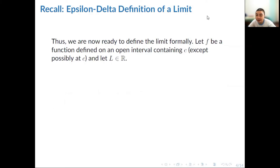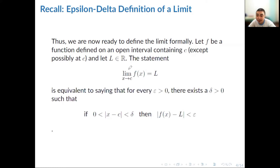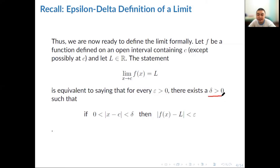At this point, we're ready to formally define the limit. Let f be a function defined on an open interval containing c, except possibly at c, and let l be a real number. The statement 'the limit of f of x as x approaches c equals l' is equivalent to saying: for every epsilon greater than 0, there exists a delta greater than 0 such that if the absolute value of x minus c is greater than 0 but less than delta, then the absolute value of f of x minus l is less than epsilon.